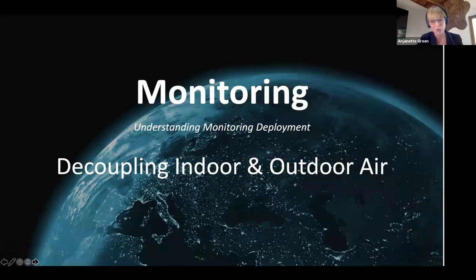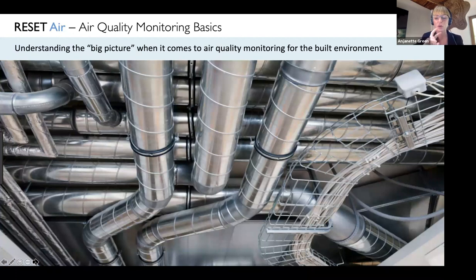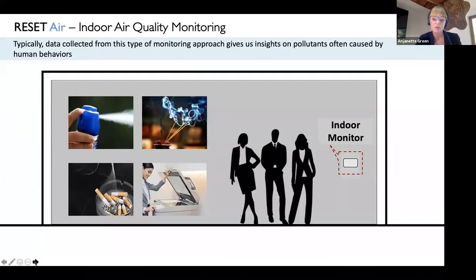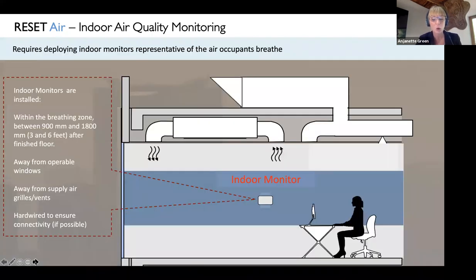Let's talk about monitoring and how we decouple indoor and outdoor air quality data. There are two approaches: first, indoor air monitoring, where monitors are placed in interior spaces and data gives insights on pollutants caused by human behaviors — like particulate matter from secondhand smoke or vacuuming, or VOCs released from cleaning products. Reset codifies how monitors should be installed — they must be placed within the breathing zone and away from operable windows and air supply sources.